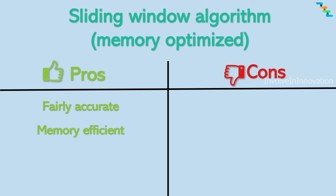The disadvantage of this memory-optimized sliding window variant is that because it assumes a constant rate of requests during the previous fixed window period, it is only an approximate representation of requests in the previous window, not an accurate one.